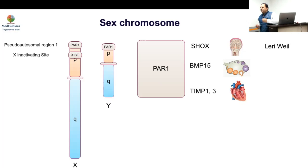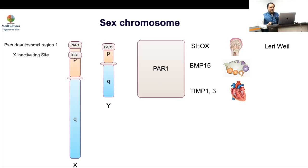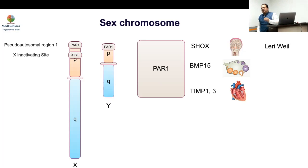Now we understand that not every Turner patient will behave the same. Some may have the whole X chromosome gone, some may lose only PAR1, some may lose multiple genes. The manifestations are therefore heterogeneous depending on how much genetic material is affected. But in the classical presentation, it is mainly the PAR1 region that is responsible.